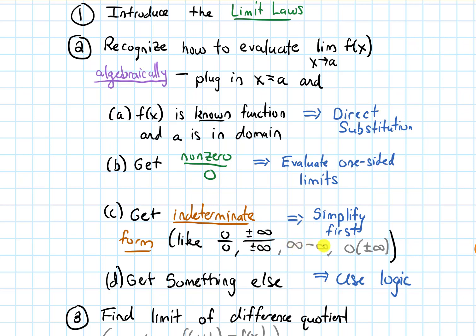Other indeterminate forms include infinity minus infinity, or zero times plus or minus infinity. We'll see a few more later in the course. If we see one of these indeterminate forms, we will simplify first.